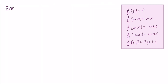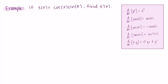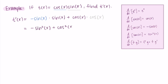Let's try another example. If T(x) equals cosine x times sine x, find T prime of x. Here we have cosine times sine — that's a good indicator to use the product rule. Why don't you pause the video and try this one on your own? I'm calling cosine the first function (f in the formula) and sine the second function (g). So I have the derivative of cosine, which is negative sine, times sine left by itself, plus cosine left by itself times the derivative of sine, which is cosine. Cleaning this up: T prime(x) = −sin²x + cos²x.